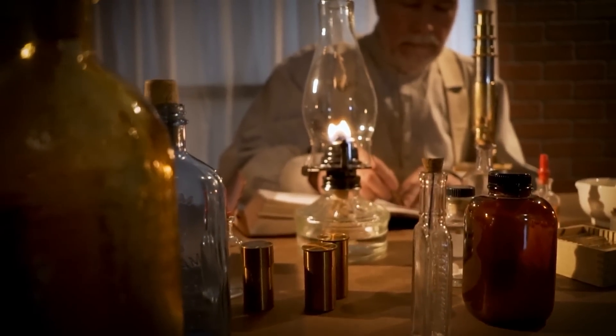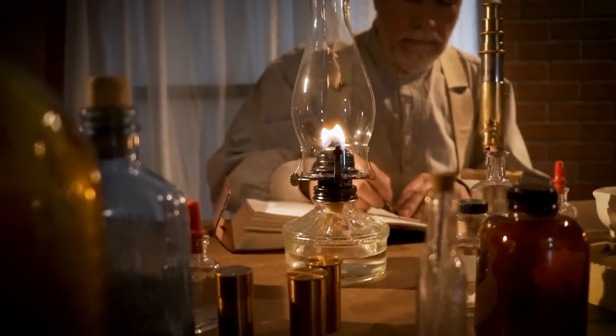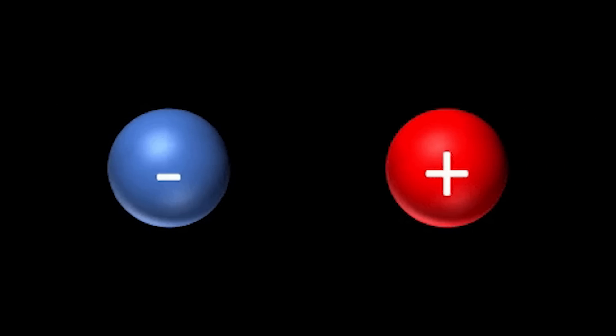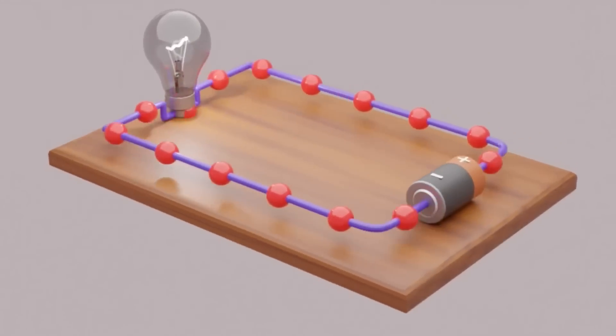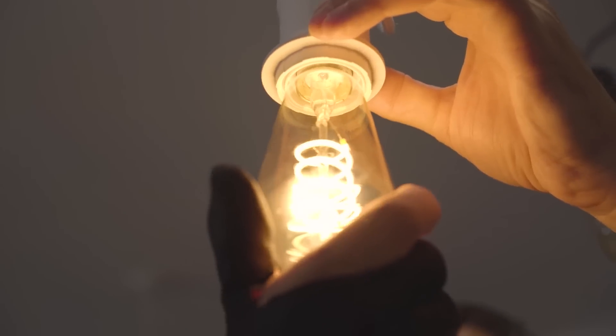Scientists believed that electric charges existed in two forms, with similar charges repelling each other and opposite charges attracting. They also discovered that currents were created by electric charges in motion, which we now know as electricity.